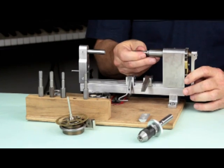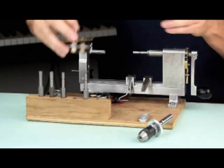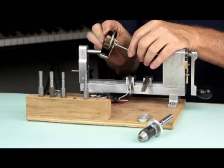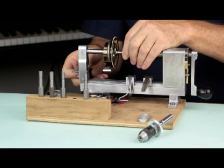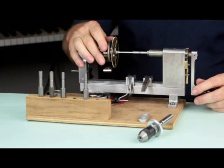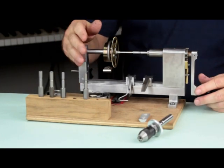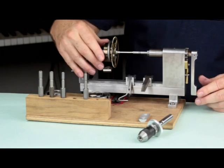Just pop the proper size letdown chuck into the headstock of the spring winder, then insert the square end of the winding arbor into the chuck—that's the end that slips over the movement pillar.